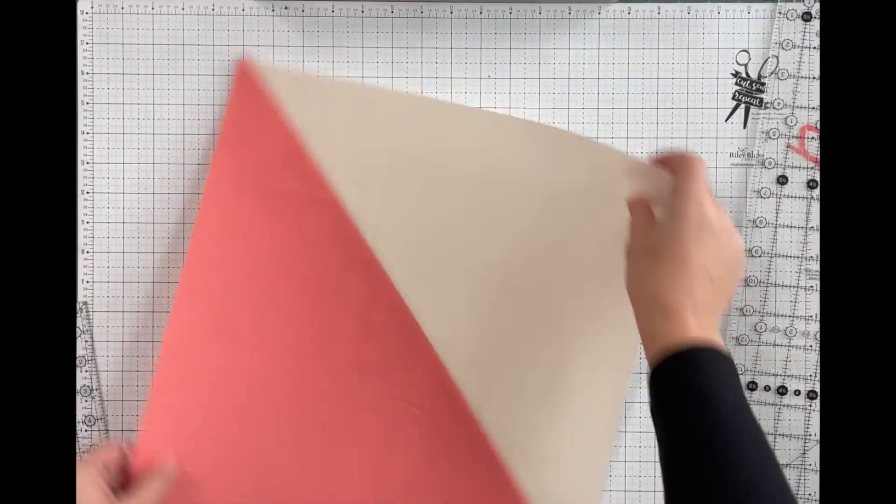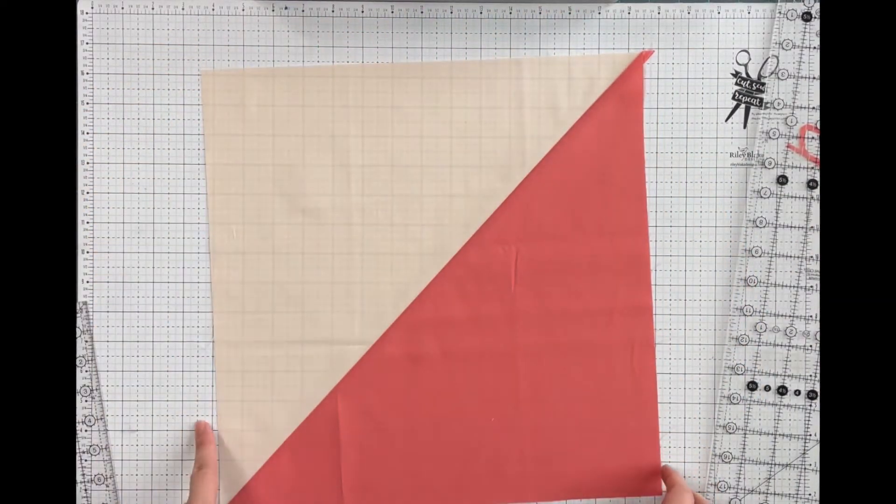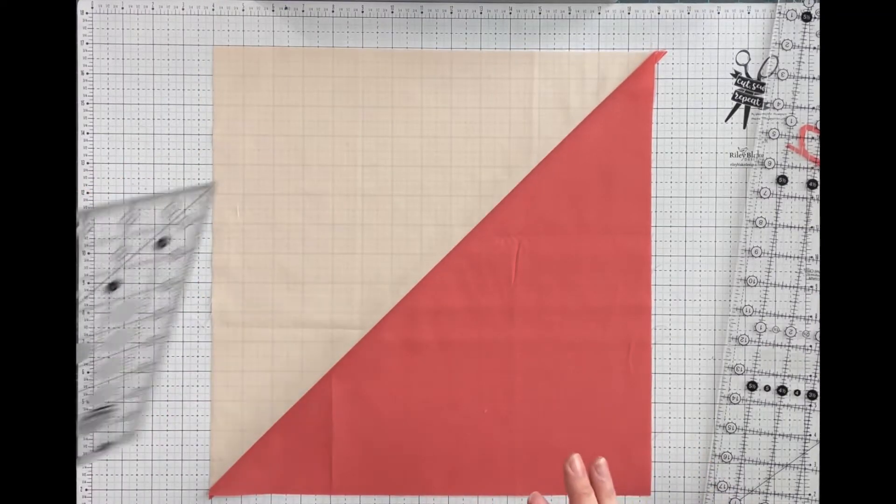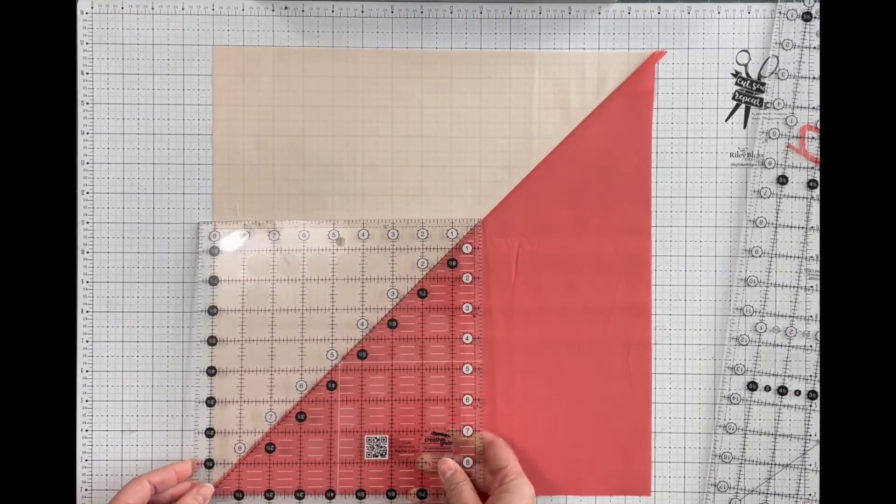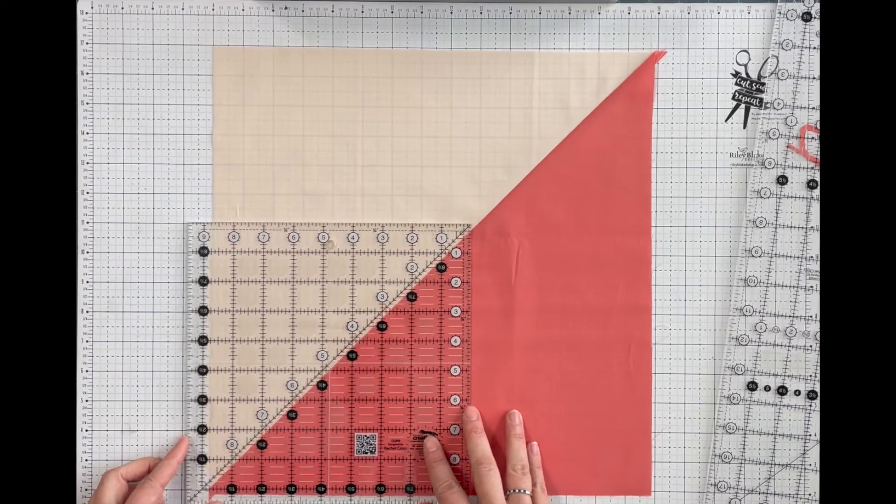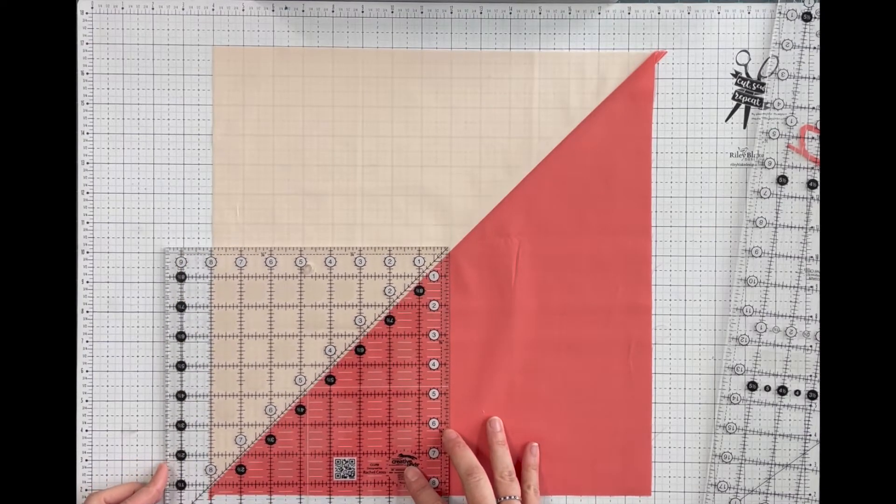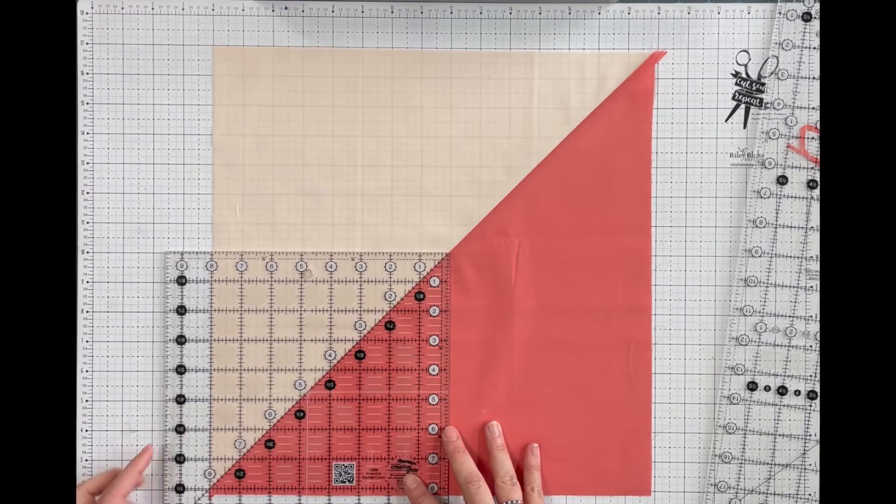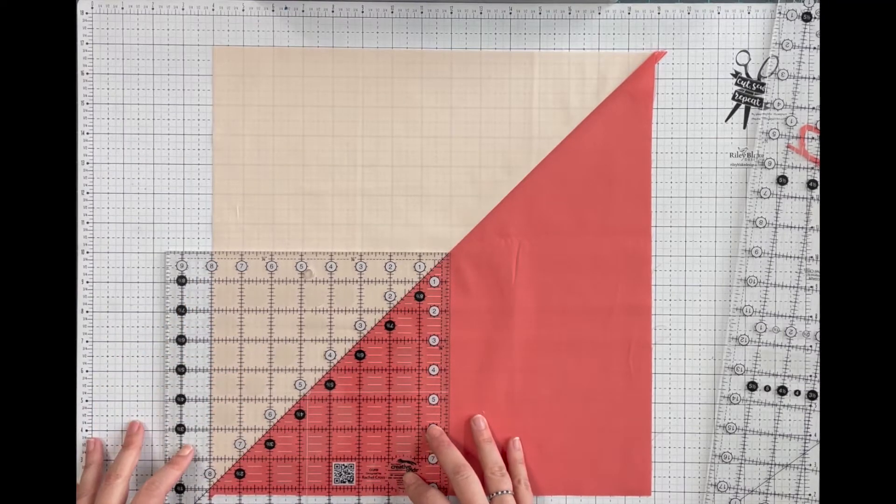I'm going to rotate my block 180 degrees. So this is my cut edge on this side, and I'm going to line up this ruler again, the diagonal with the diagonal on my HST. And I like to make sure that my 8 inch line is lined up with my cut edge.